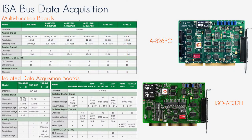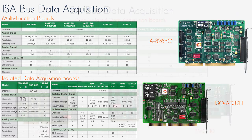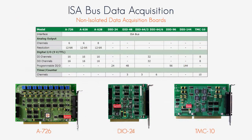The A-826PG is a 16-bit multi-function analog and digital I/O board for the PC-AT compatible computer. It is a 12-bit analog output board with 16 digital input channels and 16 digital output channels, supporting both current and voltage output range.